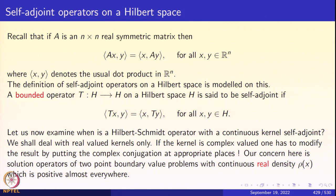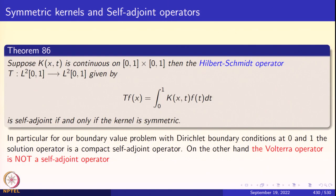We want to keep the notions simple. If the kernel is complex valued, one has to deal with complex conjugates. Here we look only at real kernels because these problems arise from two-point boundary value problems with a real density ρ(x) — the density of a string or membrane. For the most part, we deal with real-valued functions, so there is no need for complex conjugates. A Hilbert-Schmidt operator will be self-adjoint if and only if the kernel is symmetric.